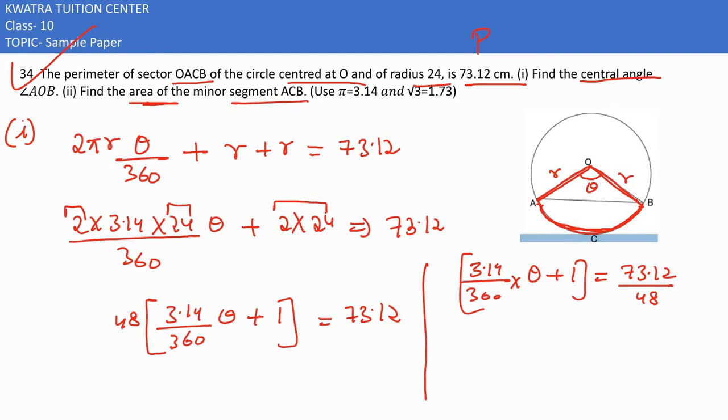73.12 divided by 48 is approximately 1.52. And on the left side we have 3.14 into theta divided by 360.